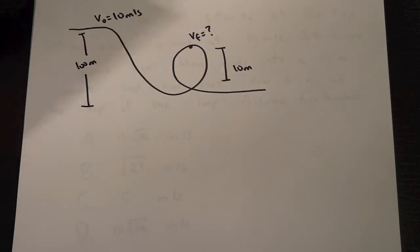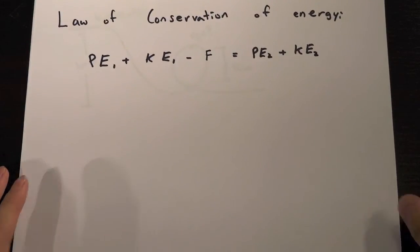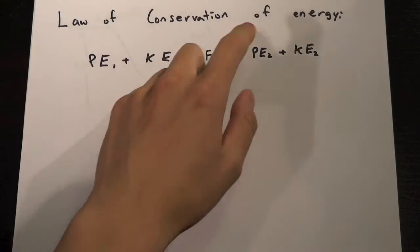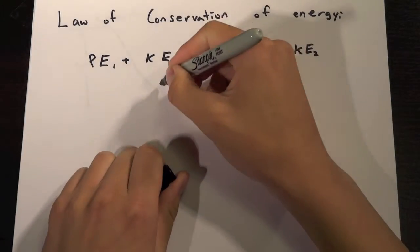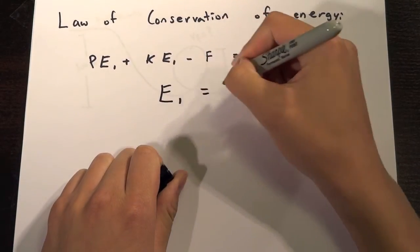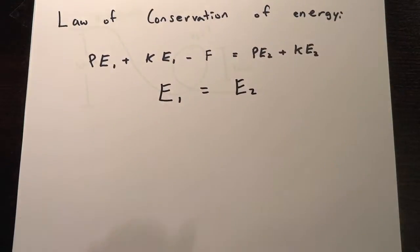So how do we solve this? Well, what we're going to use is something called the law of conservation of energy. It says that potential energy plus kinetic energy minus the frictional force is potential energy final and kinetic energy final. All this is saying is that the total energy in the beginning is the same as the total energy at the end. It's always conserved.